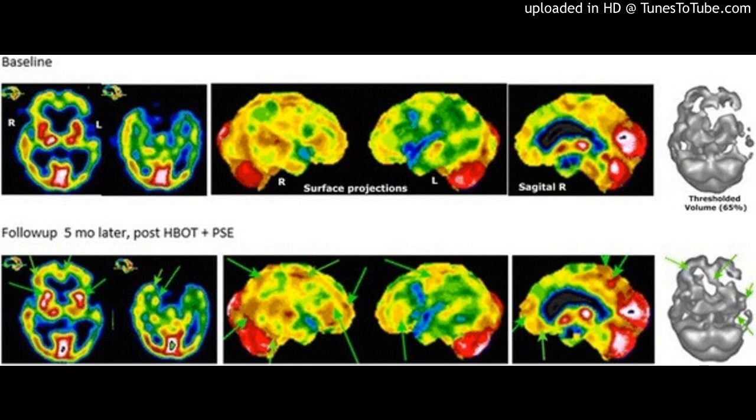Single photon emission computed tomography imaging results. The color code indicates the level of blood flow, which in turn is proportional to the metabolism level. This enables the detection of hyper or hypo-functioning areas, from lowest levels in blue hues to highest levels in white and black surrounded by white. The black and white display is a volumetric rendition at a standardized threshold level for both studies.